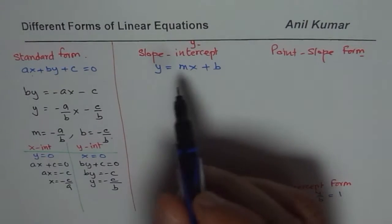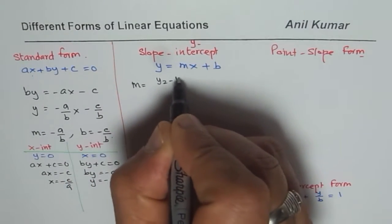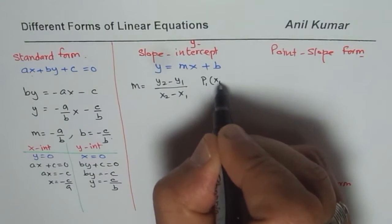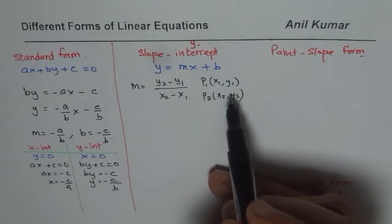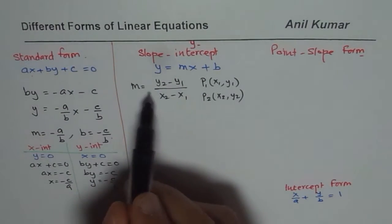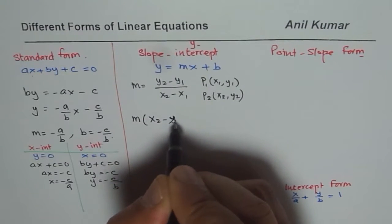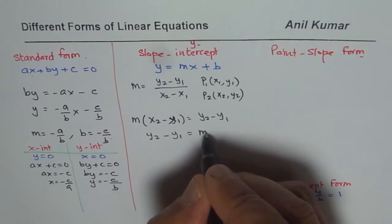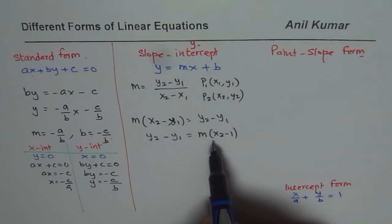Now for slope-intercept form: the slope m is written as y2 minus y1 divided by x2 minus x1, referring to two points P1 (x1, y1) and P2 (x2, y2) on a line. Rearranging by cross-multiplying gives m times (x2 minus x1) equals y2 minus y1. From this rearrangement we derive the point-slope form of the equation.